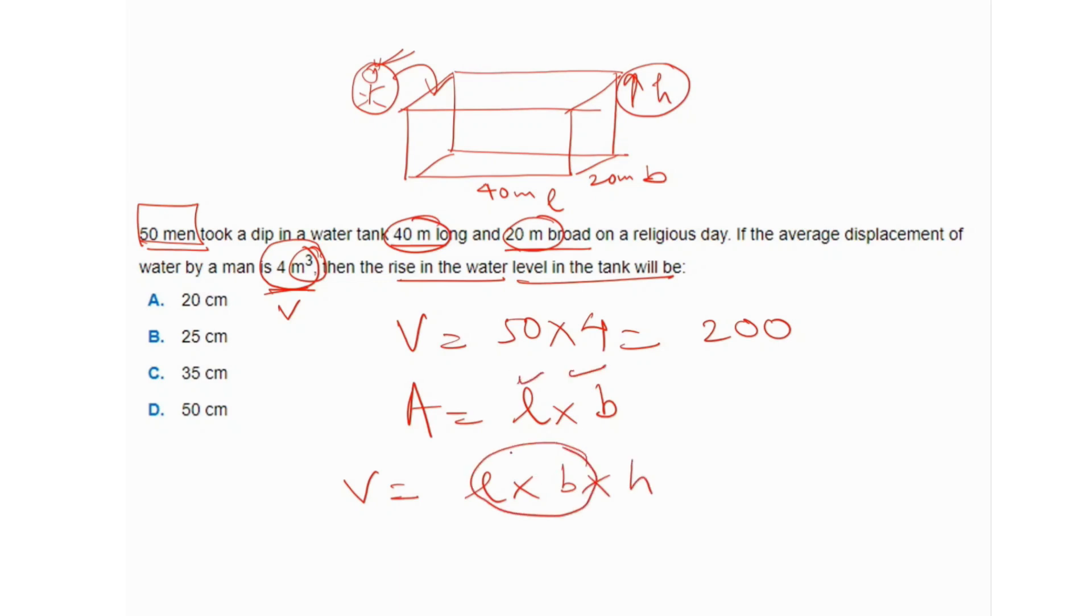We already know length and width, and we know the total volume displaced, so we can plug in these values. 200 = 40 × 20 × h. Solving for h: h = 200/(40 × 20). The zeros cancel, giving us 1/4 meter.